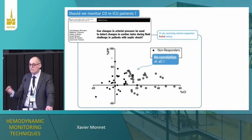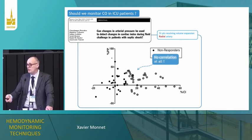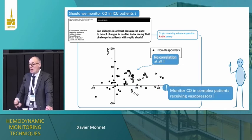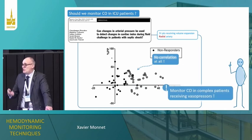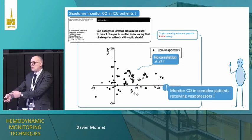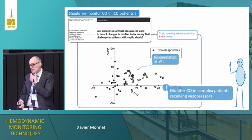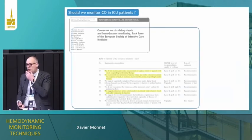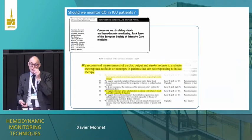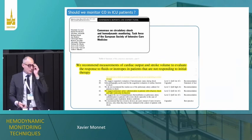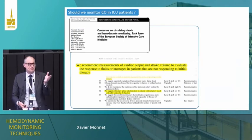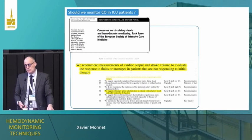In a study in Brussels by the team of Jean-Louis Vincent and Daniel De Backer, they gave a fluid bolus and assessed pulse pressure. There was no correlation between the concomitant change in cardiac index — no correlation. Again, in complex patients where you want to know what happens, you need to measure cardiac output directly. This may be true from the emergency room level already.